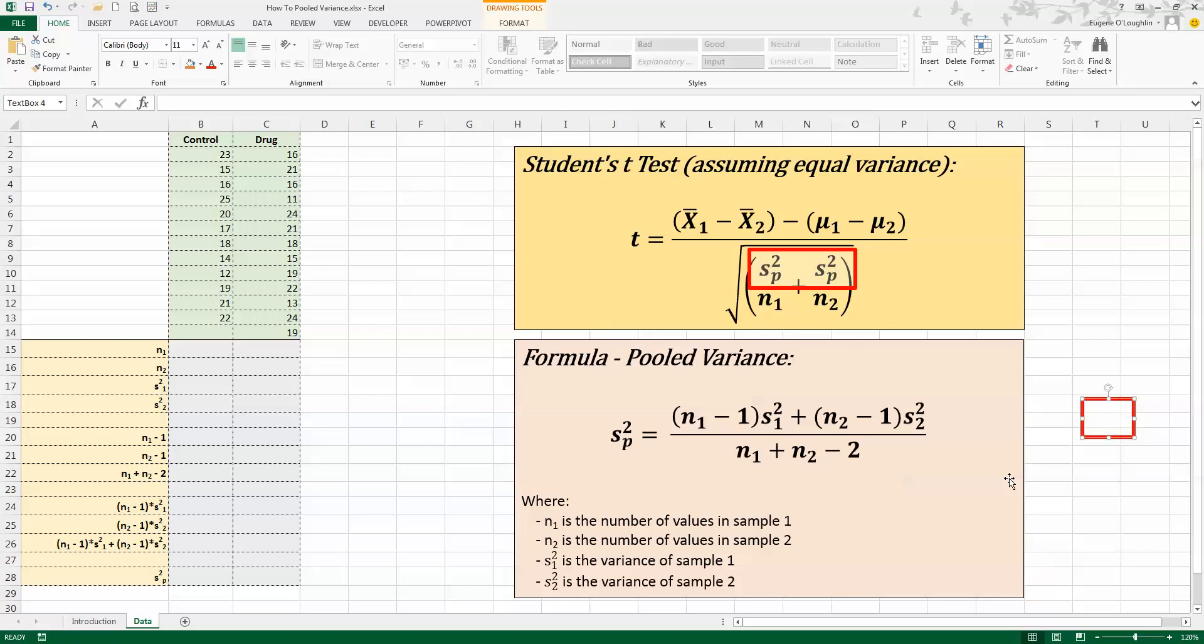So once we know those values we can plug them into our formula and calculate the pooled variance value which we can use in our t-test. Now over on the left hand side underneath my data I've set up in column A my values in order to build up the pooled variance values that you see in the formula. So let's go ahead and start to fill in these values.